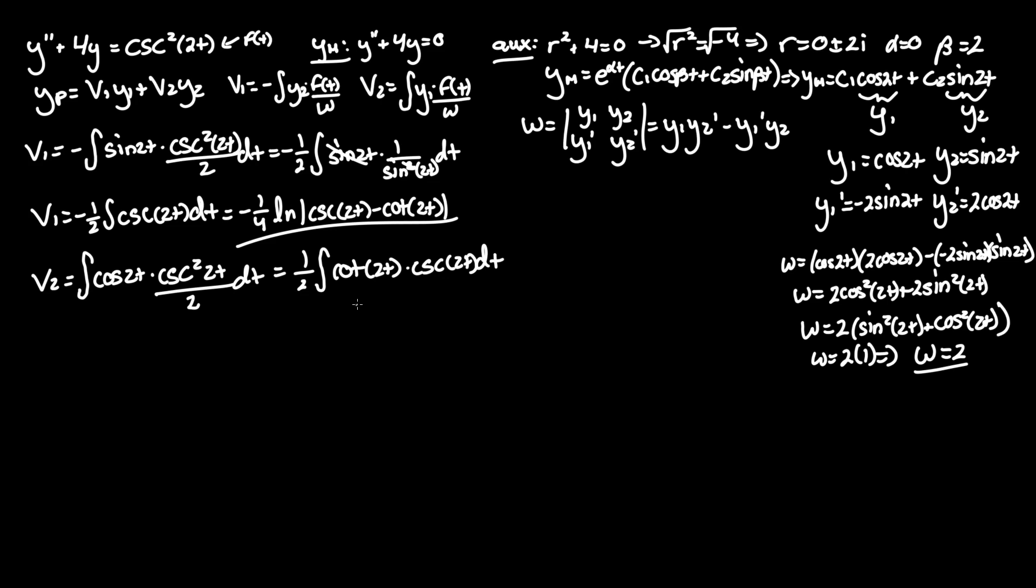And unfortunately, this is another term you have to memorize, but the integral of cotangent of some value times cosecant of some value is negative cosecant of that same value. And don't forget to bring out the one half as well. So that's negative one fourth, since you're multiplying one half by one half, cosecant of 2t, which is v2.